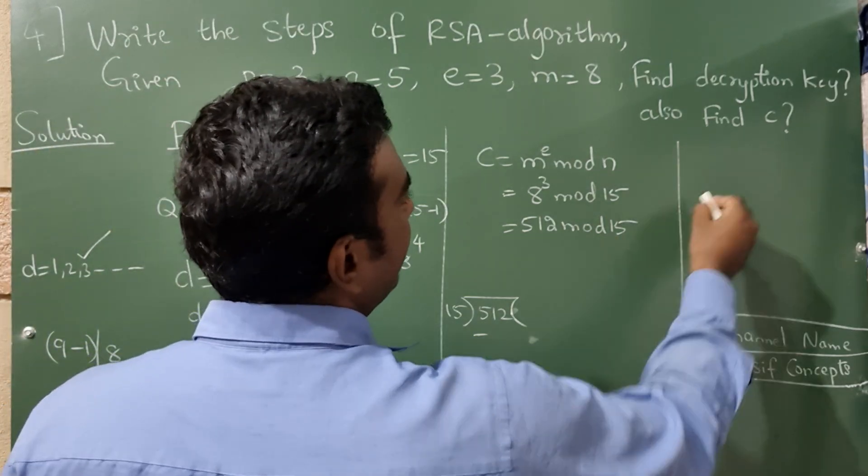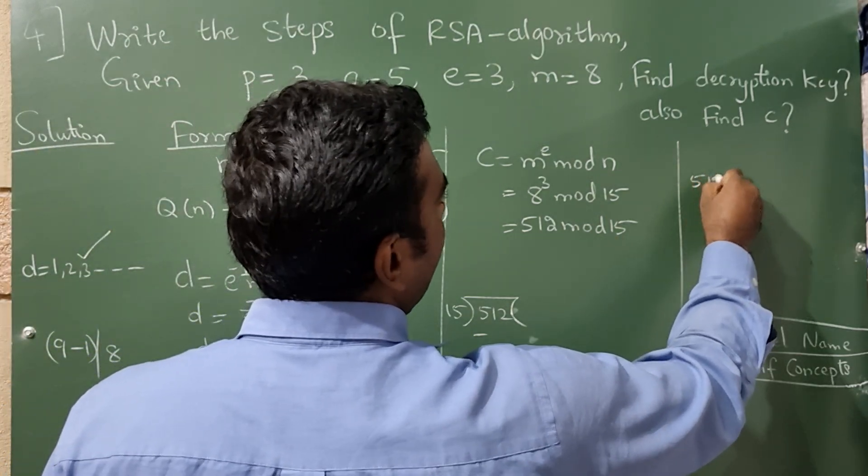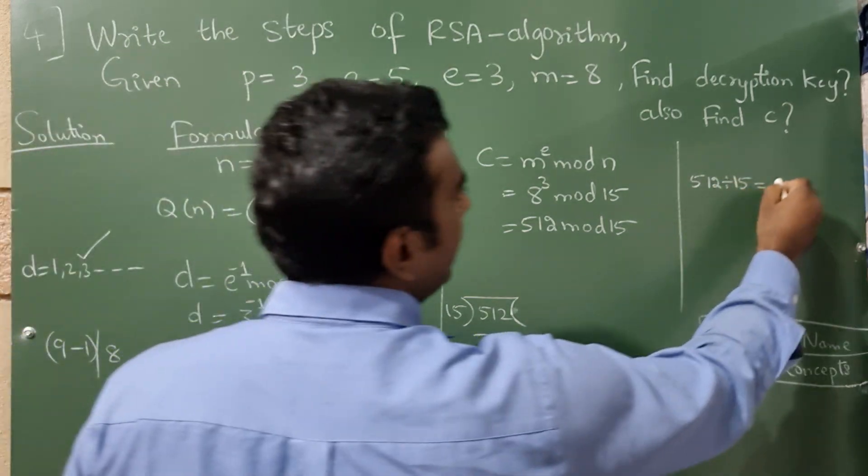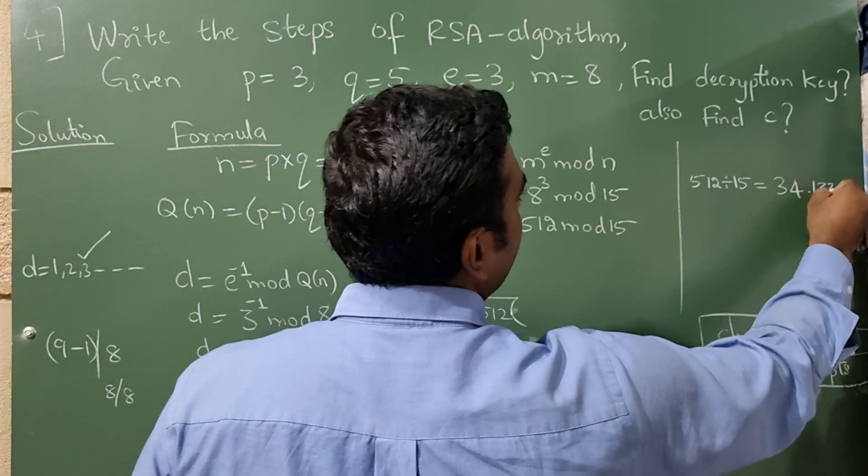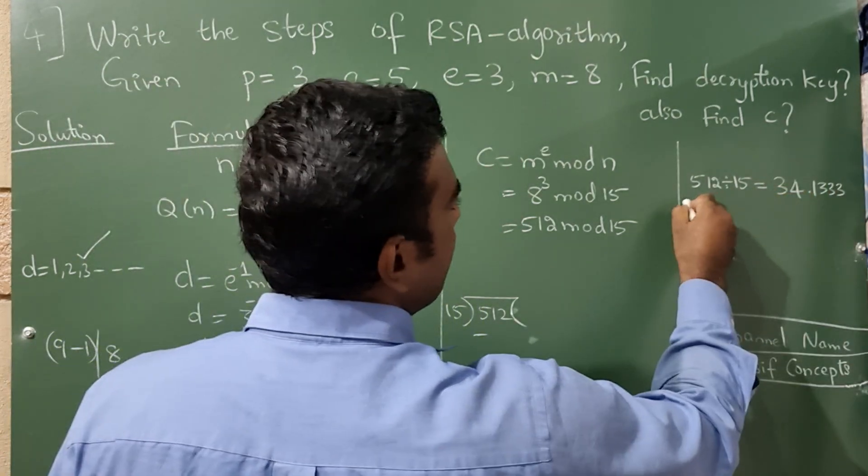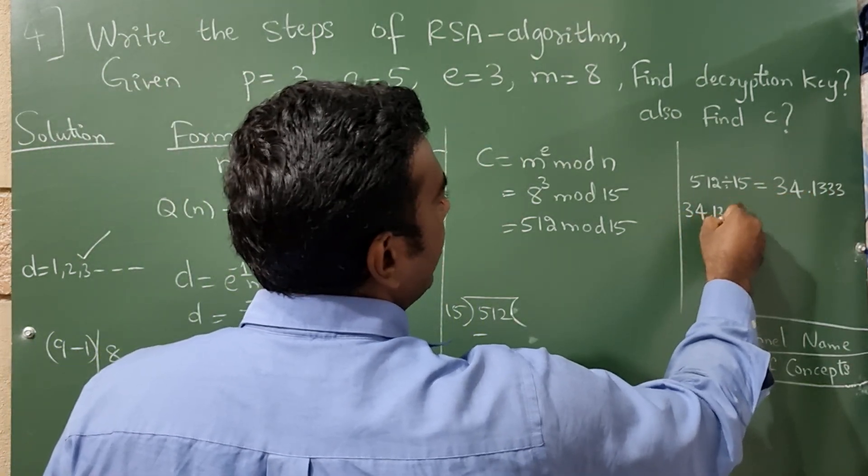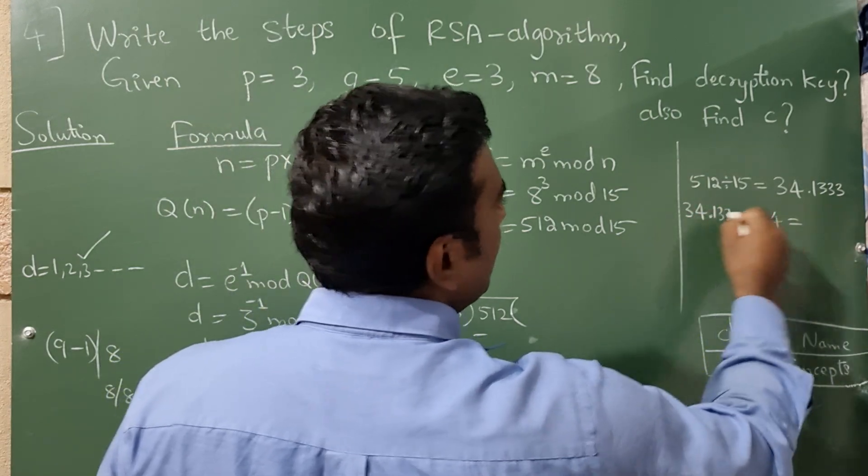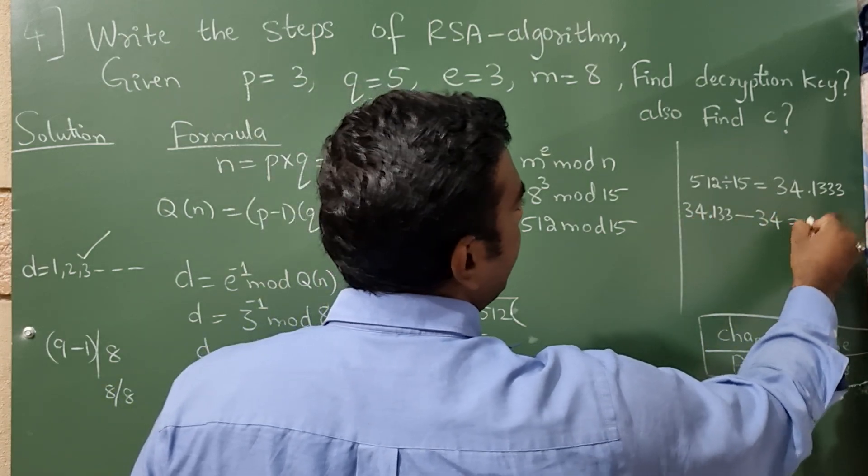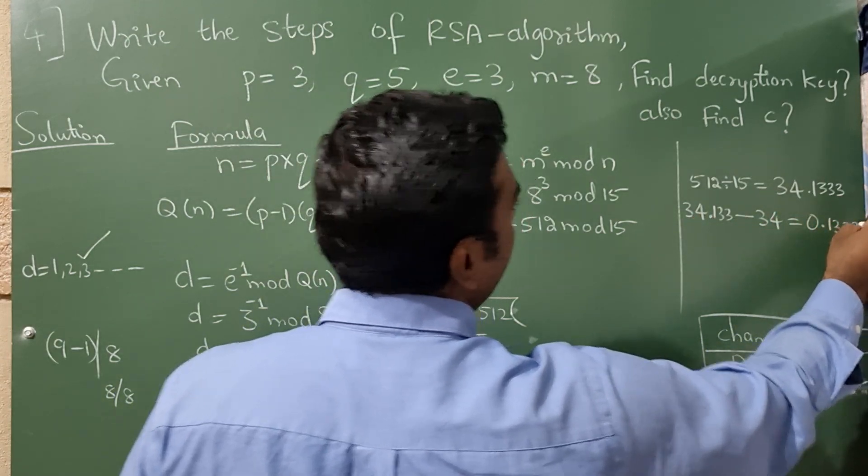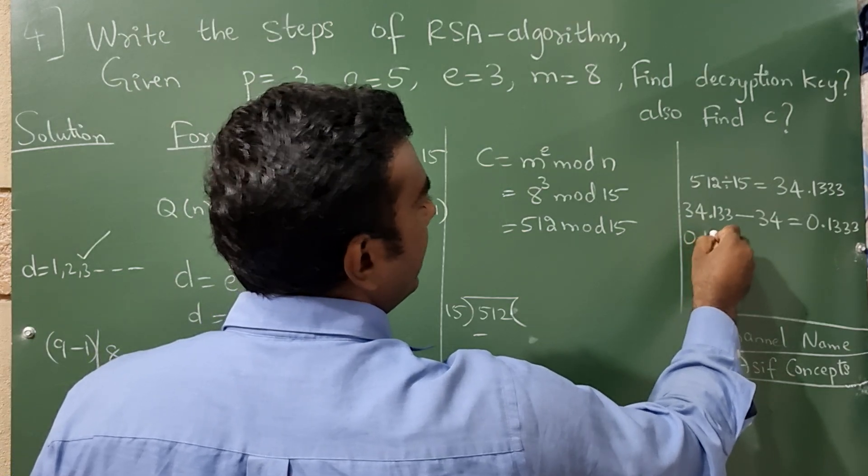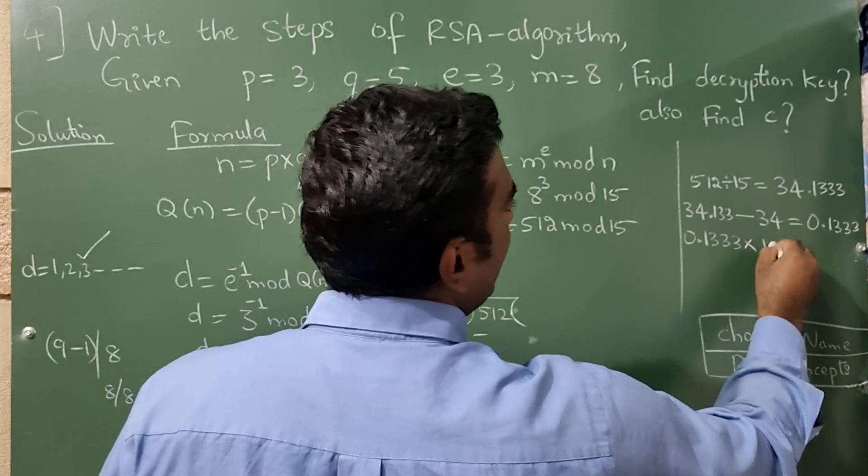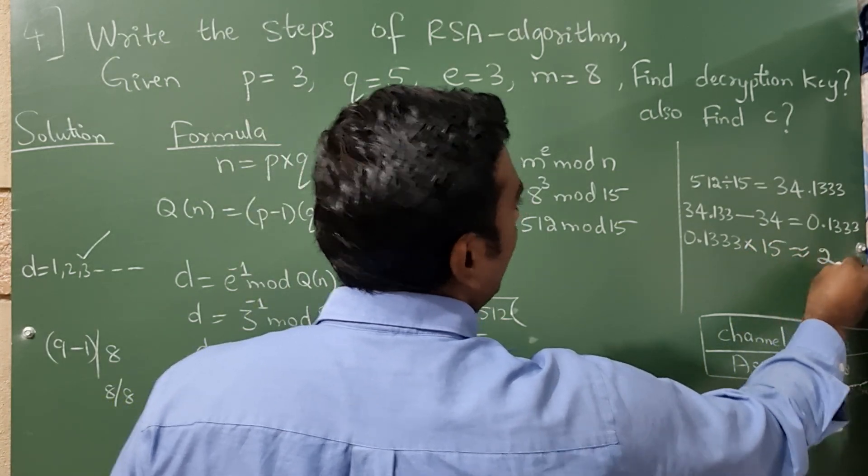Or else there is one more method to solve. So 512 divided by 15. So if you divide this, you will get 34.1333 and so on. Next, this 34.133 minus the whole number is 34. So always you should solve in this method itself. So it will be 0.1333 and so on. Now this 0.1333 into 15. So you will approximately get 2.